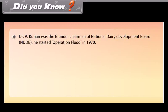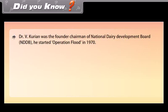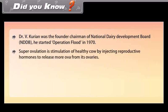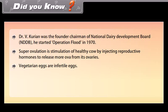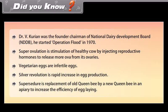Did you know: Dr. V. Kurian was the founder chairman of the National Dairy Development Board (NDDB) and started Operation Flood in 1970. Superovulation is the stimulation of a healthy cow by injecting reproductive hormones to release more ova from its ovaries. Vegetarian eggs are infertile eggs. Silver revolution refers to the rapid increase in egg production. Super seizure is the replacement of an old queen bee by a new queen bee in an apiary to increase the efficiency of egg laying.